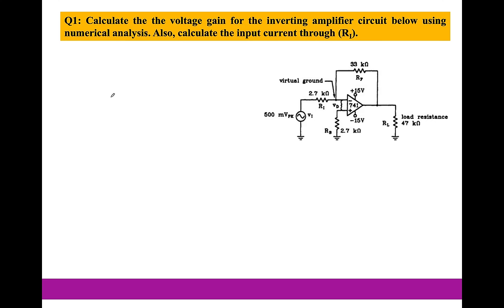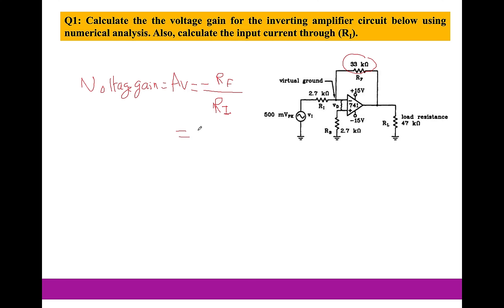Recalling from class, the voltage gain AV for the inverting operation amplifier is minus RF — the feedback resistance, which is 33 kilo ohms — divided by the input resistance R1, which is 2.7 kilo ohms. So the gain is minus 33k divided by 2.7k. Don't forget the minus sign because this is inverting. That gives us minus 12.2. That's the gain from this inverting operation amplifier circuit.